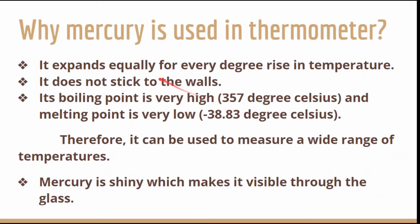Why is mercury used in the thermometer? It expands equally for every degree rise in temperature, it does not stick to the walls, its boiling point is very high at about 357 degrees Celsius, and its melting point is very low at minus 38.83 degrees Celsius. Therefore it can measure a wide range of temperatures, and it is very shiny, making it visible through the glass.